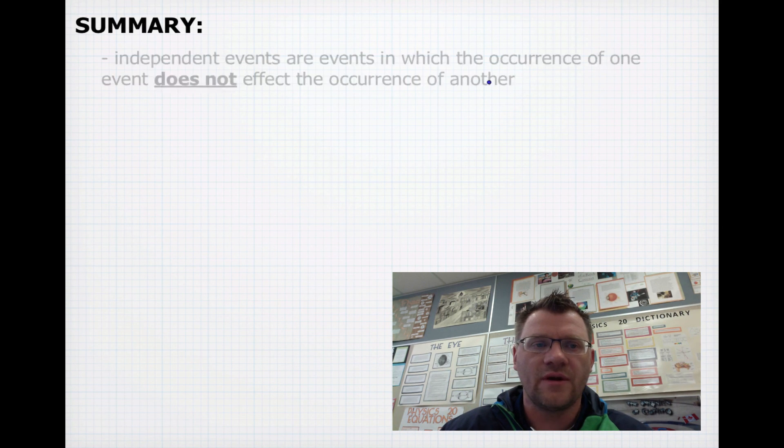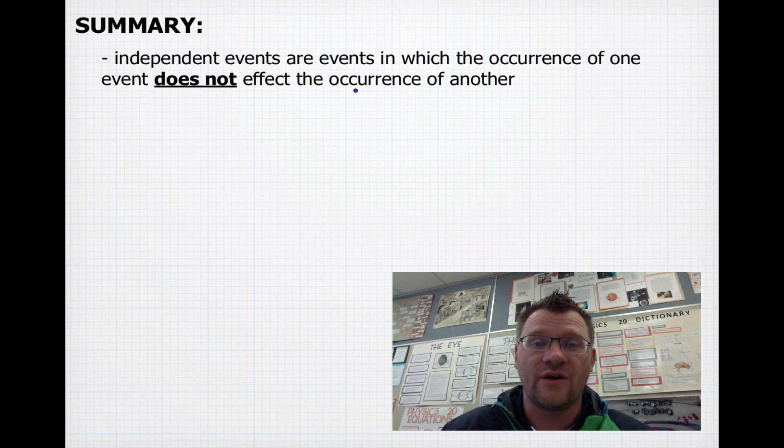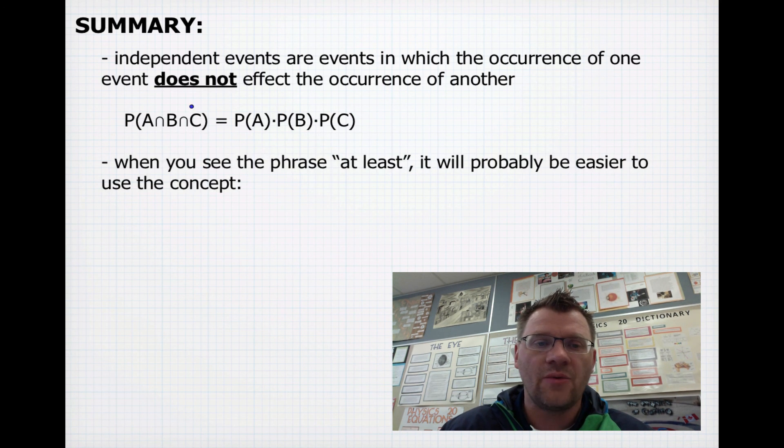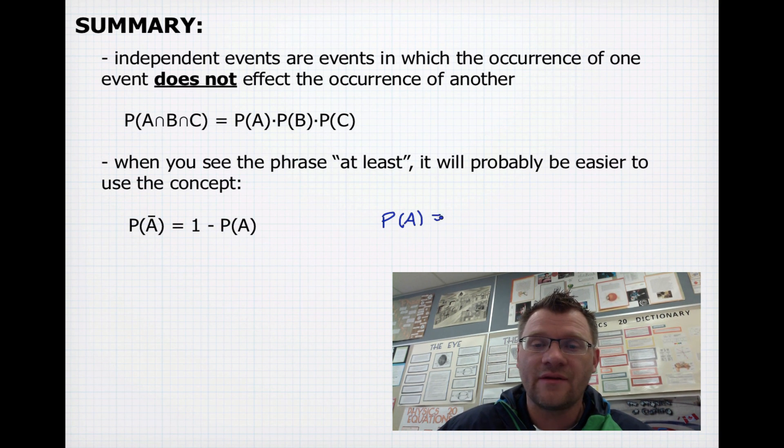So in summary, independent events are events in which the occurrence of one event does not affect the occurrence of another. So the probability that event A and B and C are all going to occur is just those probabilities multiplied together. And when you see the phrase at least, it'll probably be easier to use this concept, that the probability of A bar, now this just means the probability of something not happening, is equal to 1 minus the probability of something happening. And likewise, the probability of something happening is equal to 1 minus the probability that's not going to happen.